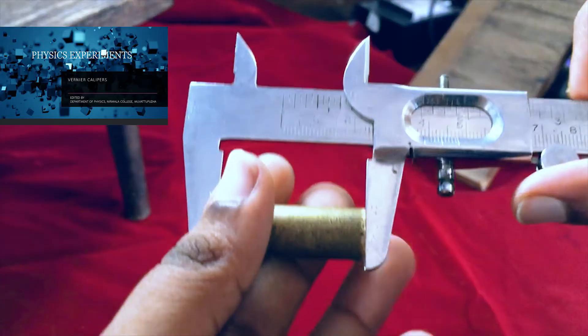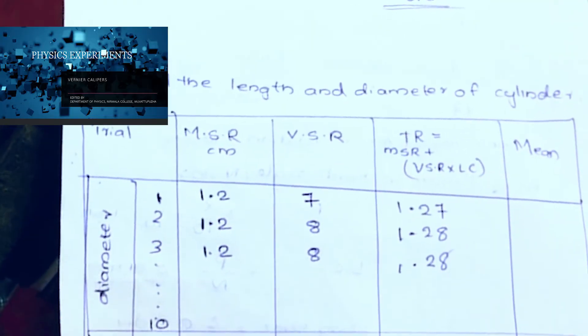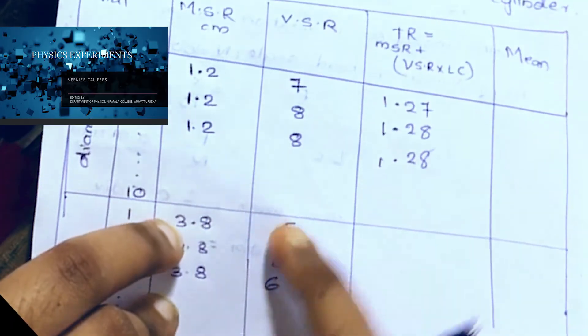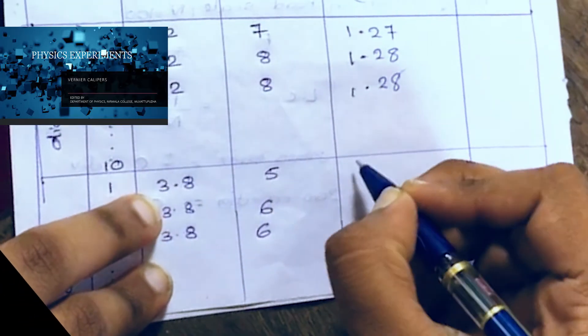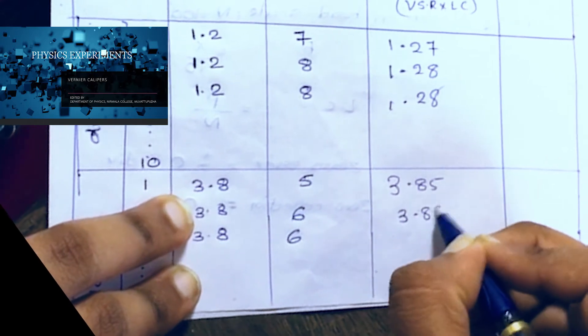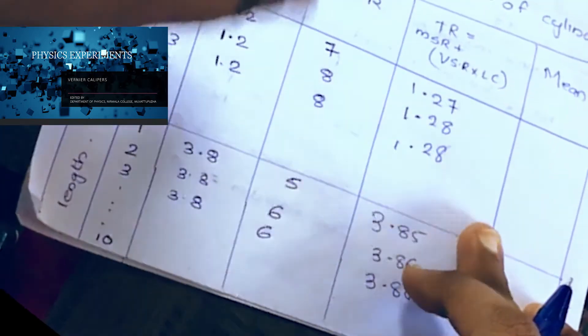Now let's calculate the length readings. For length, we use the same method - MSR plus VSR into least count. That gives 3.85, 3.86, 3.86 as total readings.